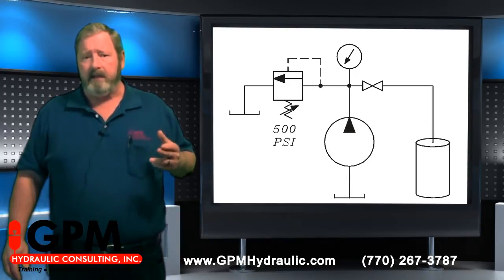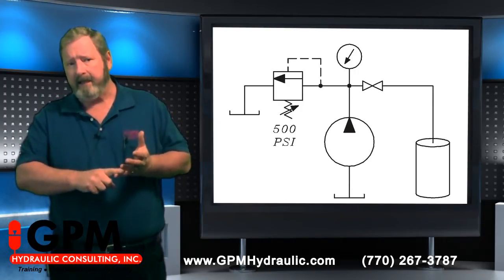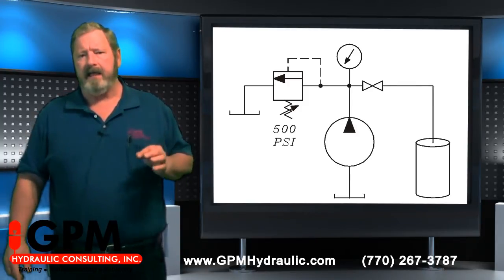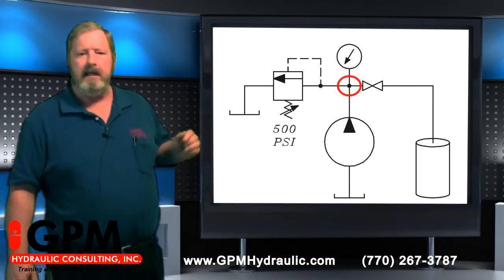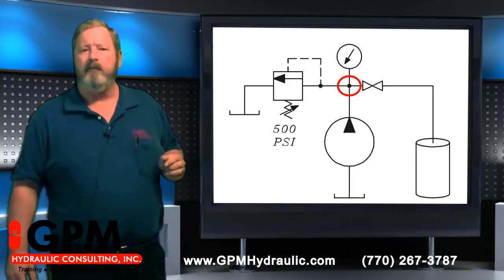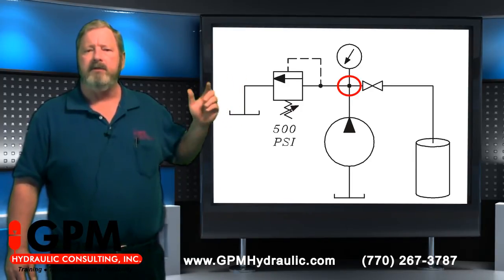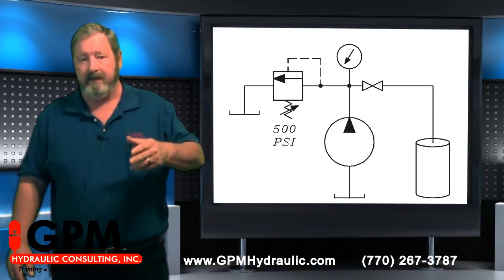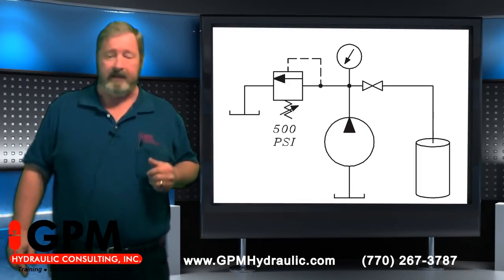Its flow is determined by two factors: its displacement and the speed of the hydraulic motor. Now when we're tracing the hydraulic flow on a schematic and we get to a T in the line, we have to follow both directions to determine the path of least resistance. Hydraulic oil will always take the path of least resistance.